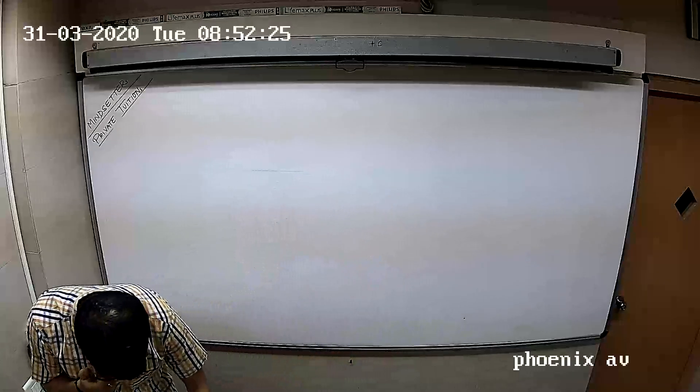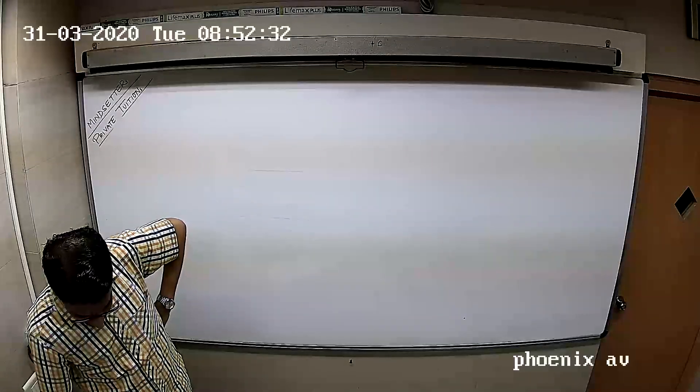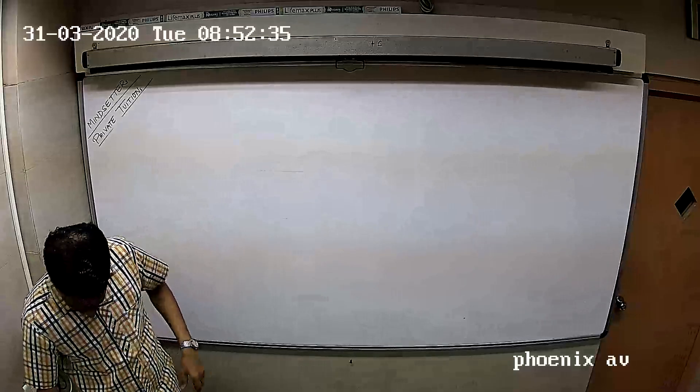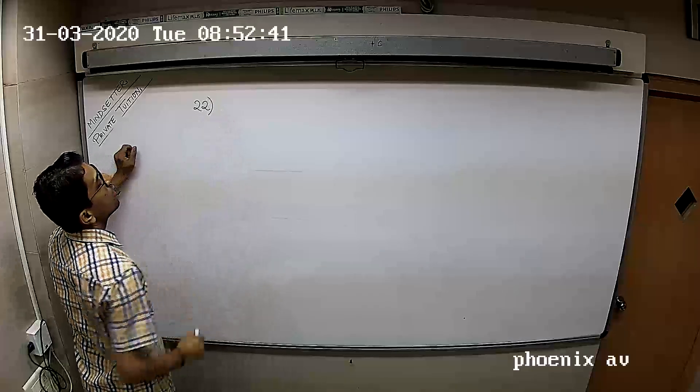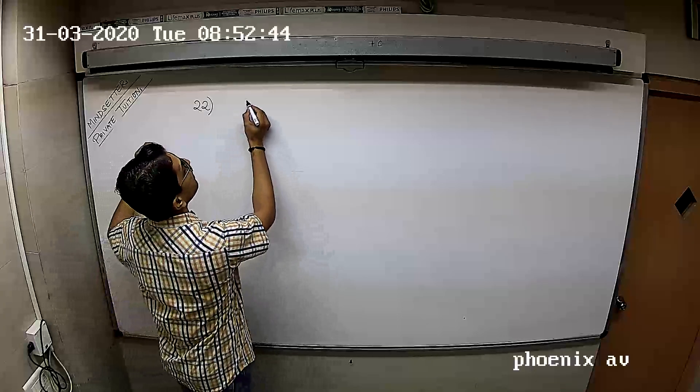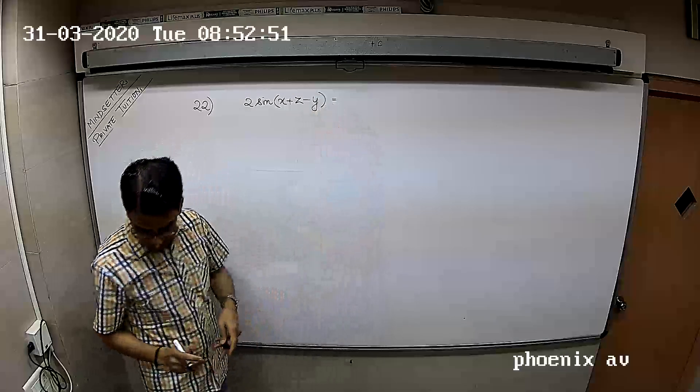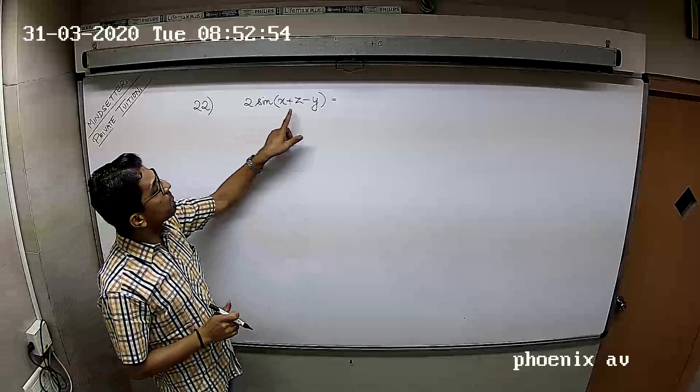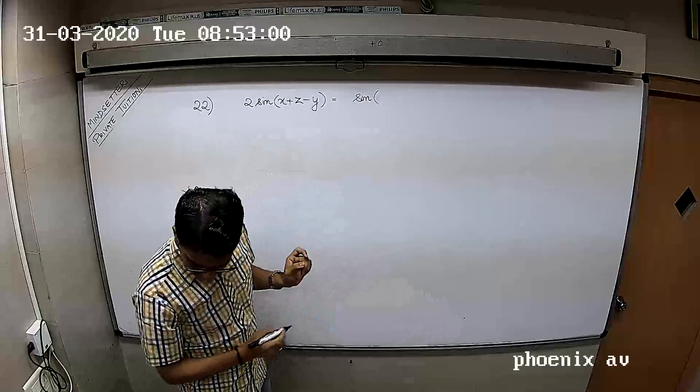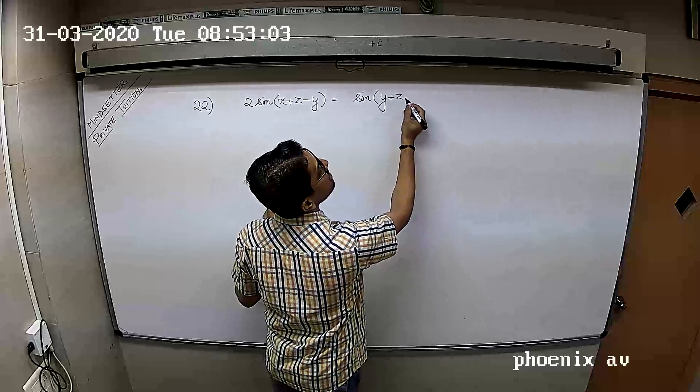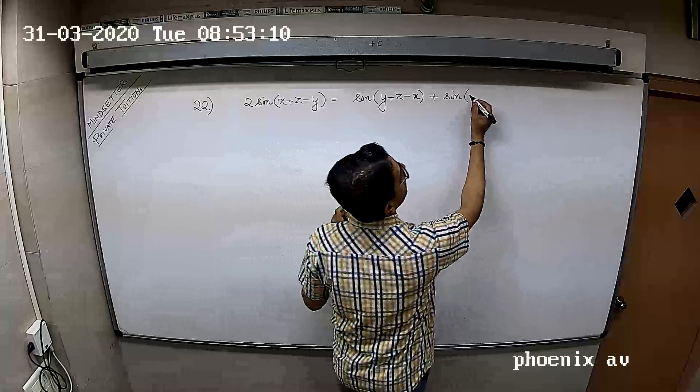Next sum, question 23. If sin X, sin Y, and sin Z are in AP, then tan X by 2, tan Y by 2, and tan Z by 2 are in? I believe 2 sin of X plus Z by 2 is equal to sin of Y plus Z by 2 plus sin of X plus Y by 2 minus Z.